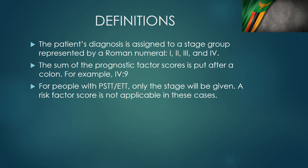Every GTN patient requires both a stage and a prognostic score. Stage I is tumor confined to the uterus. Stage II is spread to the vagina or other genital structures. Stage III is spread to the lungs, even without spread to genital structures. Stage IV is spread to other parts of the body beyond the lungs.